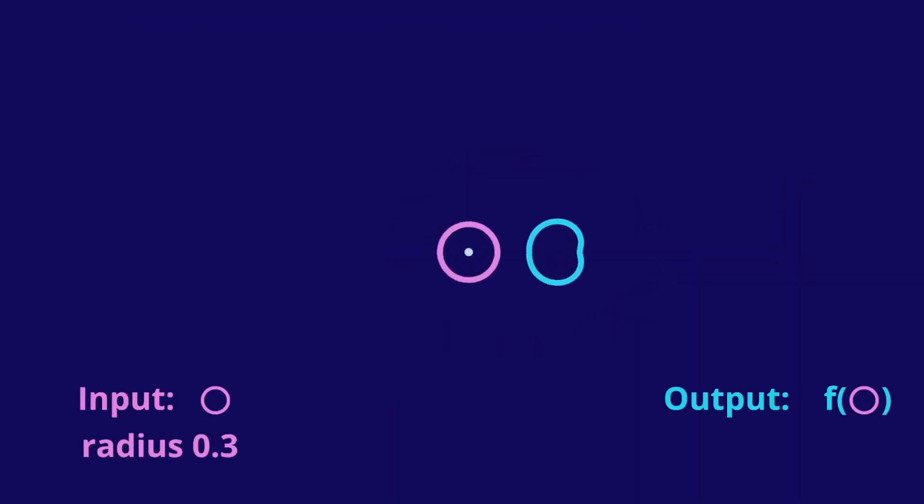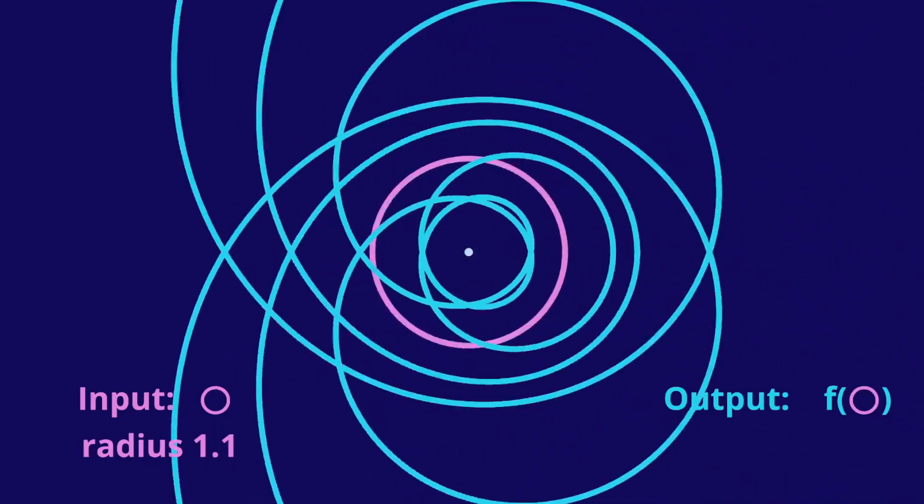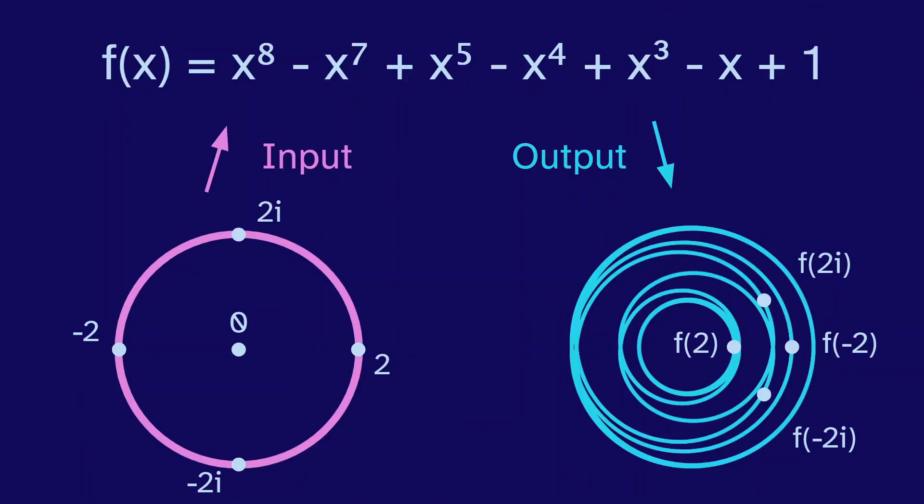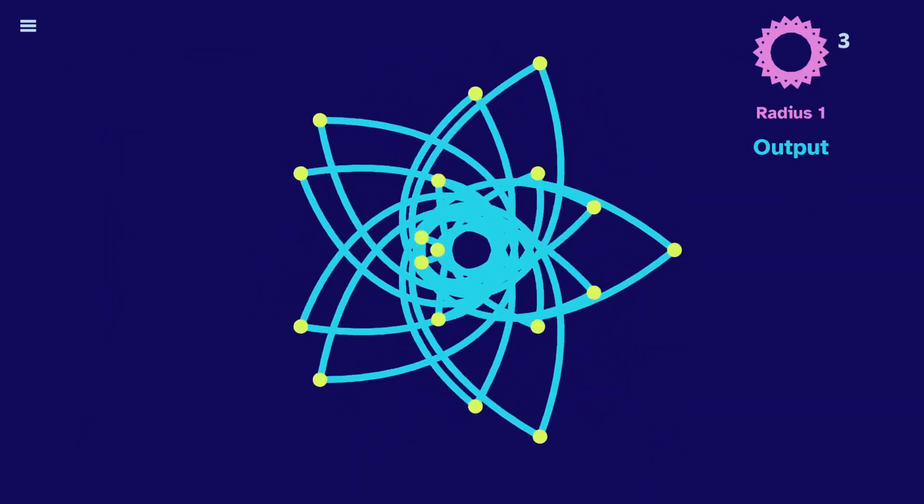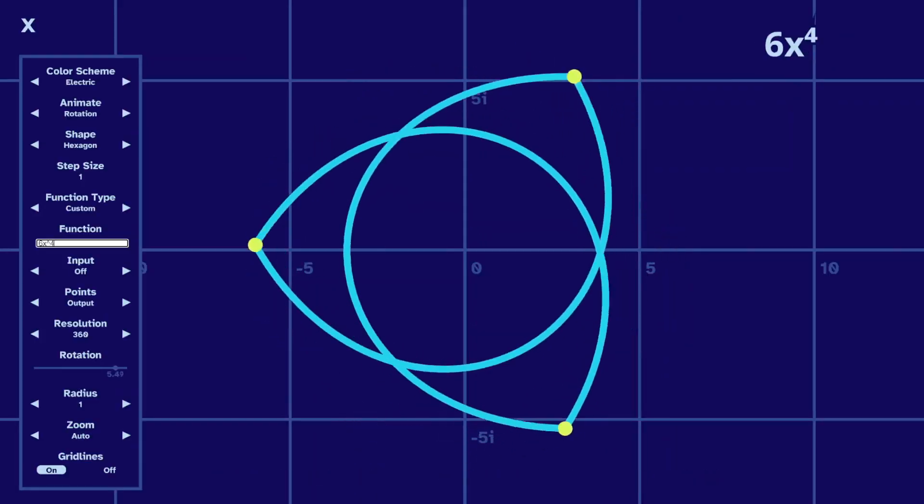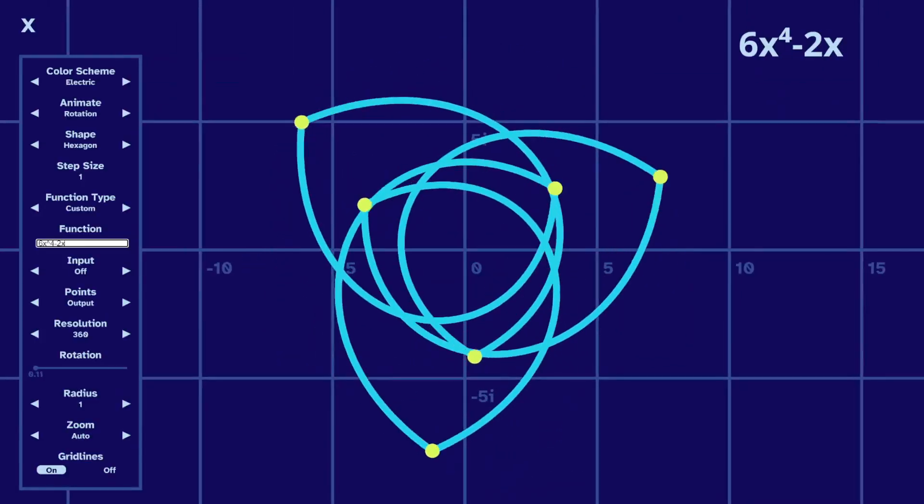In my last few videos, I discussed a way to graph complex numbers by taking a circle as an input to a polynomial. But I wanted to see other shapes, not just circles. So I built this webpage to make all kinds of complex graphs.